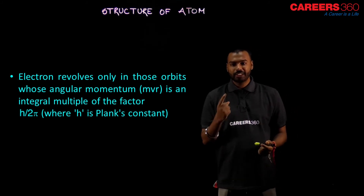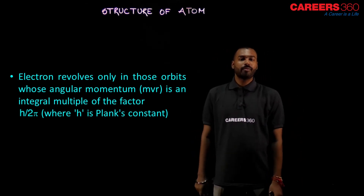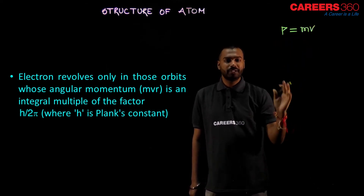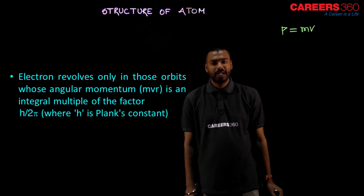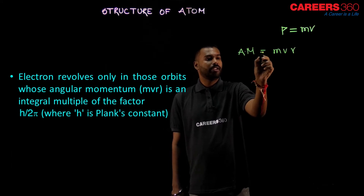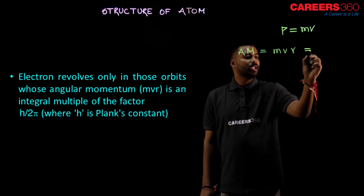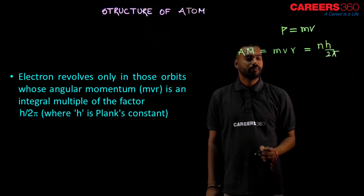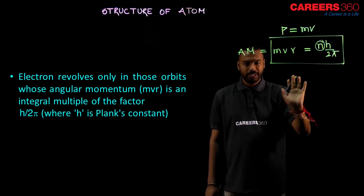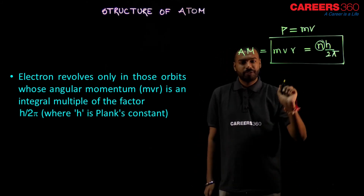Here you can see a new term. Remember: momentum has two types — linear momentum and angular momentum. Linear momentum is mv, but here we are dealing with angular momentum. The angular momentum formula is mvr. Bohr's condition is that mvr must equal nh/2π, where n is an integer (the orbit number). So the angular momentum must be nh/2π.